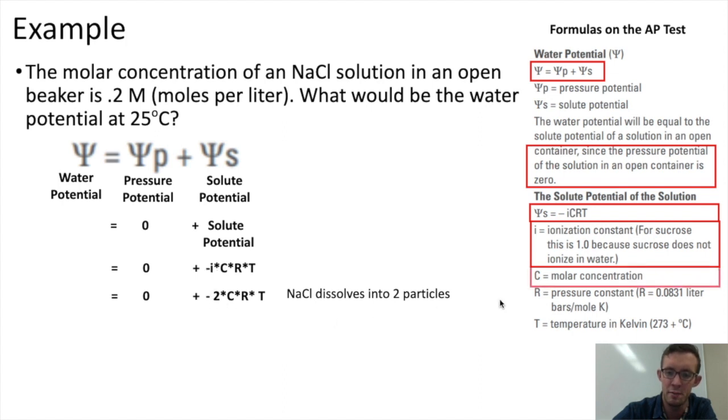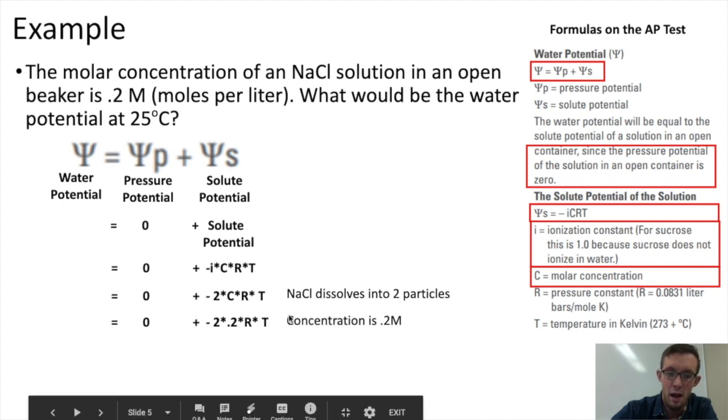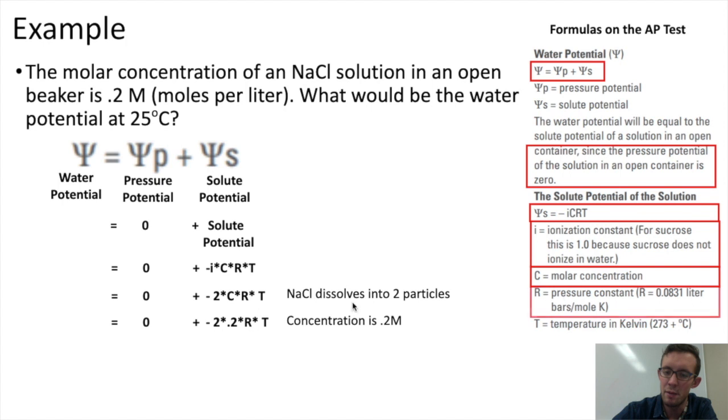We'd carry on and see that C stands for the molar concentration. In our problem, the molar concentration is 0.2. So we could plug that in. Then we could keep going and see that the R value in this equation will always be the same. It will be equal to 0.0831. It's a constant. So we could plug that in.